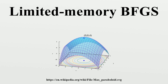After an L-BFGS step, the method allows some variables to change sign and repeat the process. Schraudolph et al. present an online approximation to both BFGS and L-BFGS. Similar to stochastic gradient descent, this can be used to reduce the computational complexity by evaluating the error function and gradient on a randomly drawn subset of the overall dataset in each iteration.